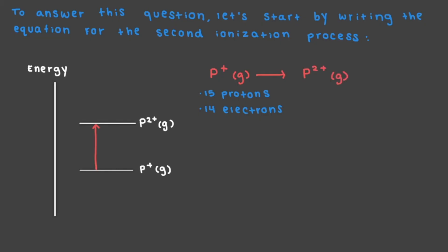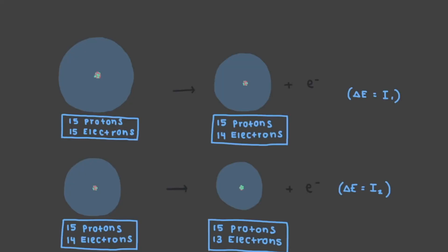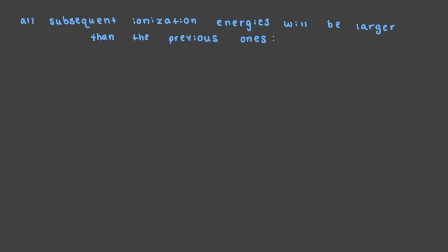Still 15 protons, but now 13 electrons. Both processes involve removing one electron from the atom, but the second ionization energy will be larger than the first. In fact, all subsequent ionization energies will be larger than the previous ones. This is because, as we remove electrons, there is an increasingly greater electrostatic attraction between the positively charged ion and the electron that is being removed that we must overcome.